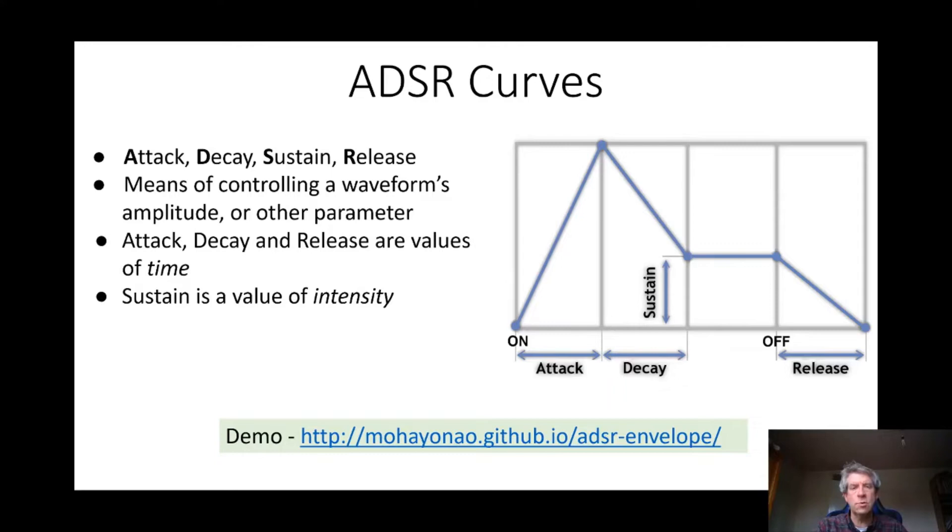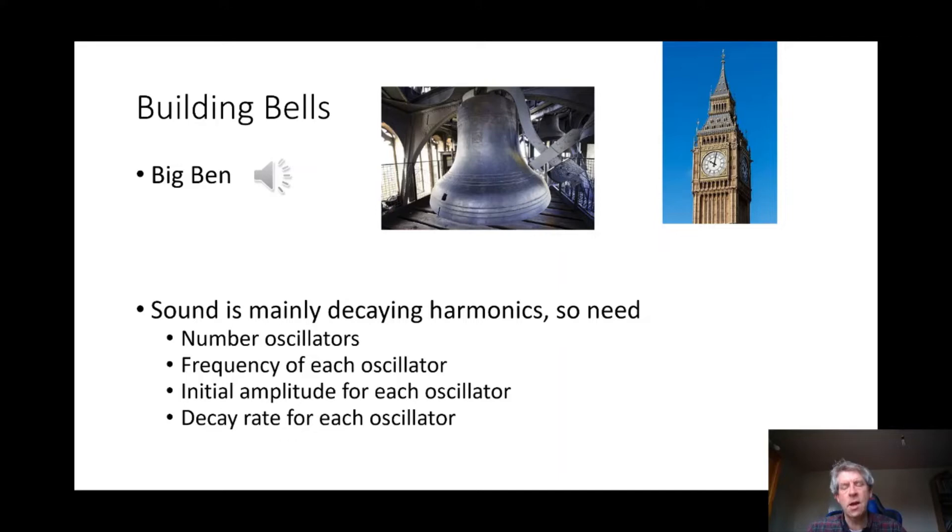Okay, so that's ADSR curves. Let's give an example of how they are used, and it's going to introduce a few more concepts. We're going to try to build the sounds of a bell, and I'm going to take the sound of Big Ben, the historic bell in the center of London. It's actually quite relevant to use at the moment because at the time I'm recording this lecture, the bell is out of use—it's being refurbished and restored, which means you can't hear the sound. So let's see if we can synthesize that sound.